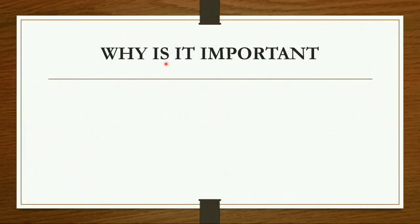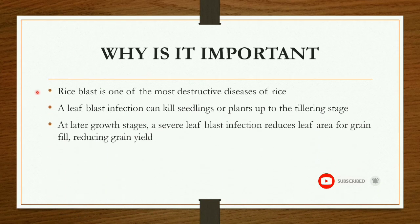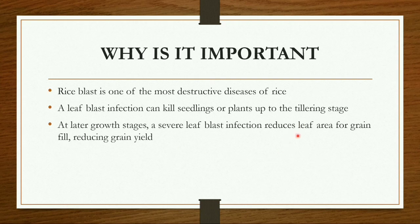Why is it important to observe whether leaf blast is occurring in the rice plant? We should take control measures to manage blast disease in rice. Rice blast is the most destructive disease in rice and may cause yield losses. It can occur at the tillering stage and kill seedlings at later growth stages. Severe leaf blast infection reduces leaf area for grain filling, reducing grain yield. It can kill rice plants at the seedling stage, so particular management practices should be followed.